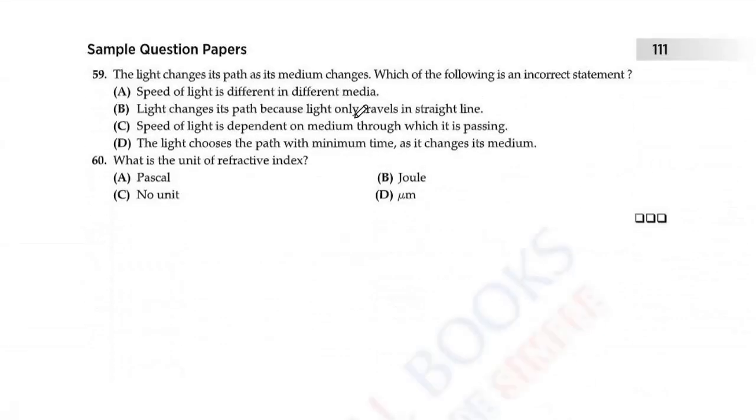Question 59: The light changes its path as its medium changes. Which of the following is an incorrect statement? Speed of light is different in different media, this is completely correct. B says light changes its path because light only travels in straight line. This is not possible, this cannot be the explanation. Next, speed of light is dependent on medium through which it is passing, this is correct. The light chooses the path with minimum time as it changes its medium, this is correct as well. So here, light is not changing its path because it travels in a straight line, that's why path is changing. This is incorrect reasoning. So B option is incorrect. Question 60: What is the unit of refractive index? Refractive index has no unit. As we just saw, the formula was sin i over sin r. Neither sin i has a unit nor sin r has a unit, they are unitless quantities. And also, if we divide the same unit, we get no unit. So option C is correct.